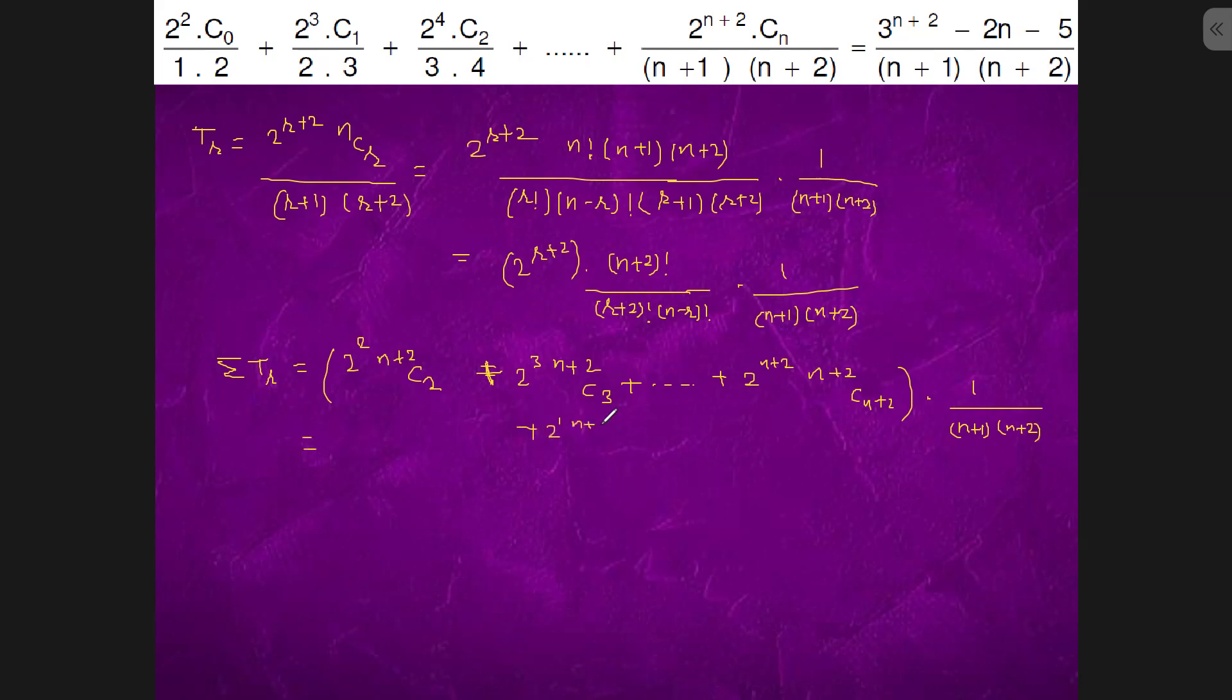power 1 n plus 2 C1, 2 to the power 0 n plus 2 C0, and subtract 2 into n plus 2 minus 1. So this is what 2 plus 1 to the power n plus 2